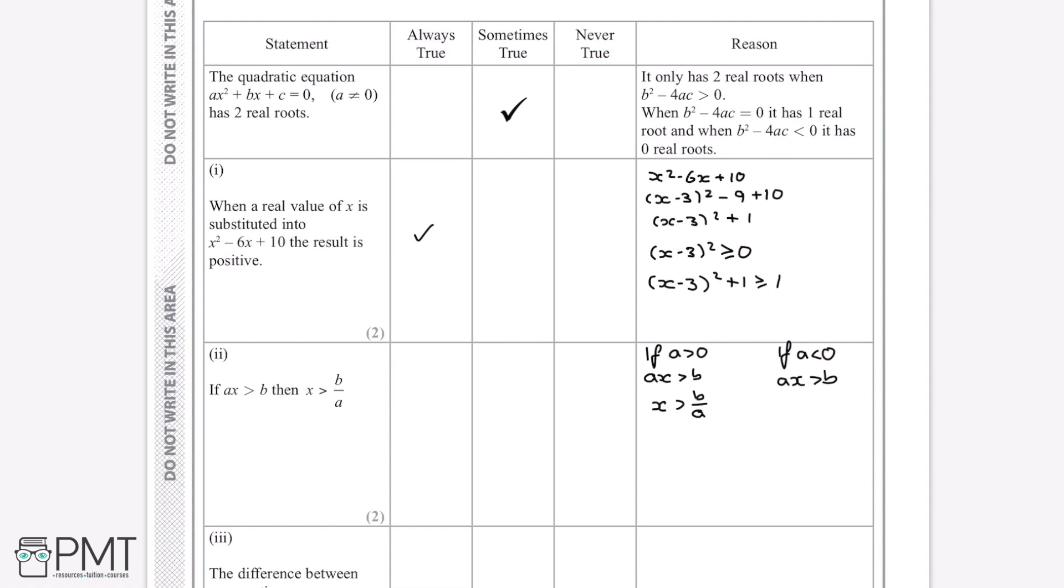So dividing both sides by a, which here is negative, would actually leave us with x is less than b over a, which is not what they've given us in this statement. This is the opposite.